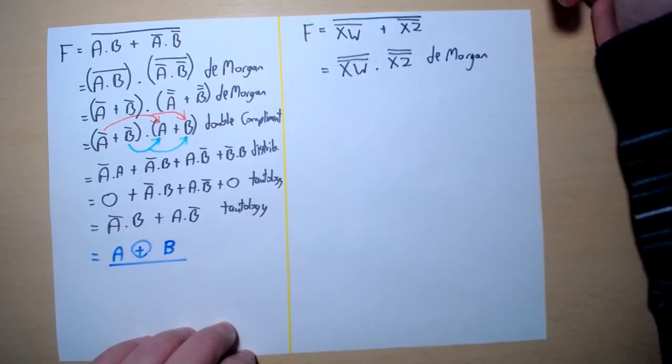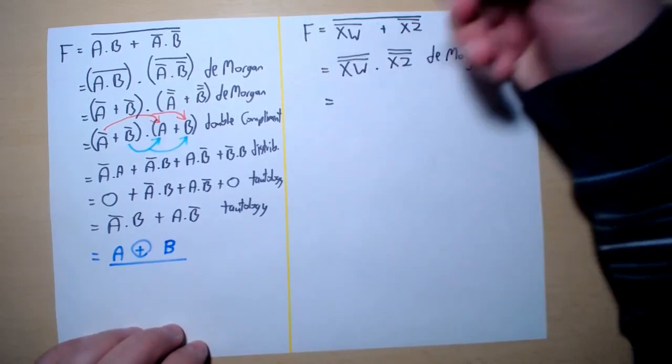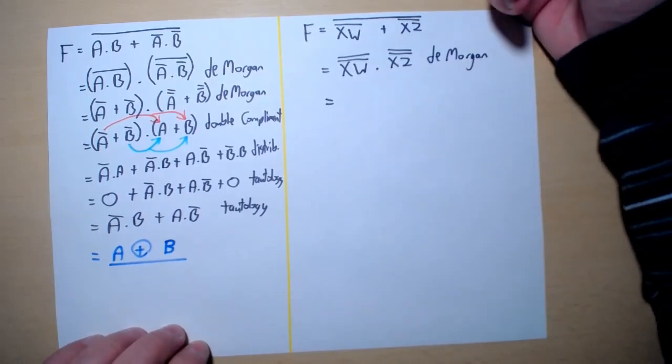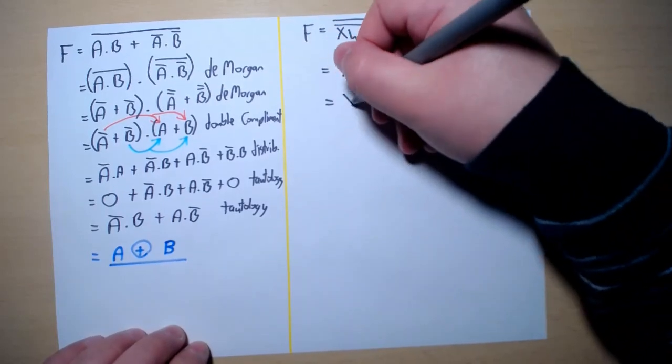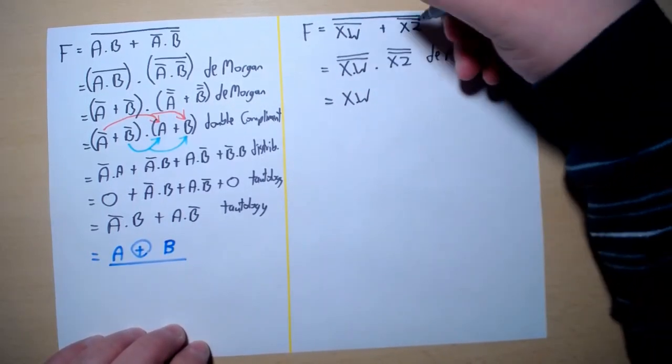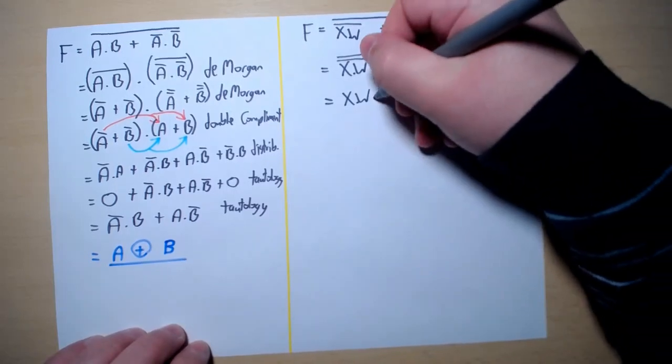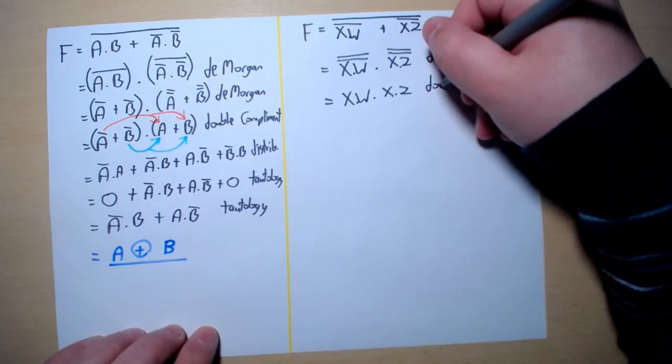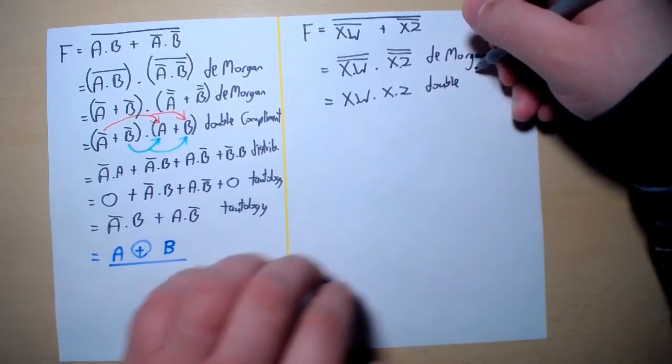Obviously using De Morgan. Now when we have two NOTs on top of each other, they will cancel each other using tautology. So we will get X W and X and Z using double complement.